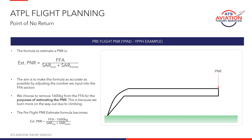The reason we remove a climb allowance for this first scenario is because of the way the formula is designed. We're essentially telling the formula: with this flight fuel available, flying out at a certain SAR half the time and a different SAR for the other half, how far can we go? When we climb out and cruise to the PNR, the SAR is not accurate because we're spending a lot of the flight at full power burning fuel climbing. So we remove the extra fuel used on the leg out to make the SAR out figure accurate, making the formula valid.